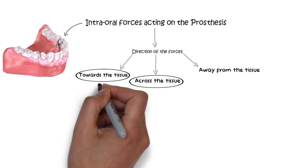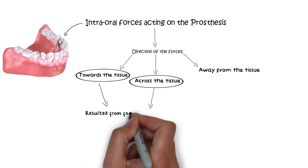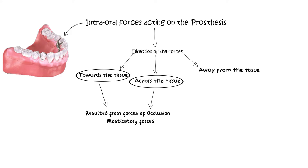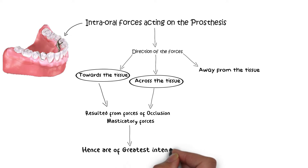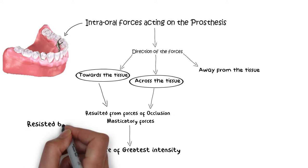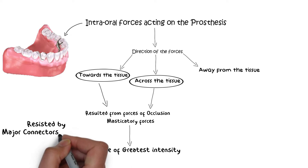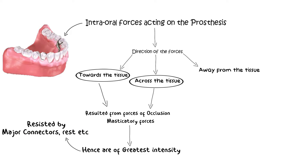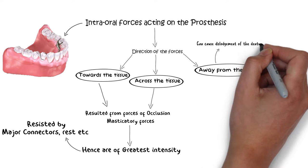These two types of forces are most often resulting from the forces of occlusion, and resistance against them is very important for a healthy oral mucosa. This resistance is provided by the major connectors, rests, and other components already discussed in previous lectures. The third type — forces that act to move the denture away from the tissue, causing dislodgement — are resisted by the direct retainers.